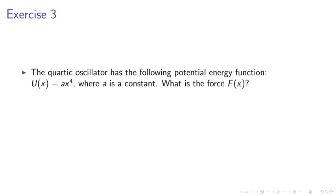Exercise 3. The quartic oscillator has the following potential energy function: U of x equals A x to the 4th, where A is a constant. What is the force F of x?